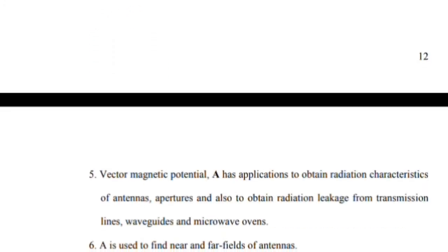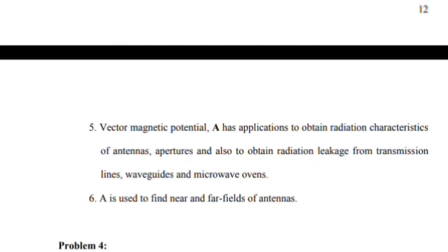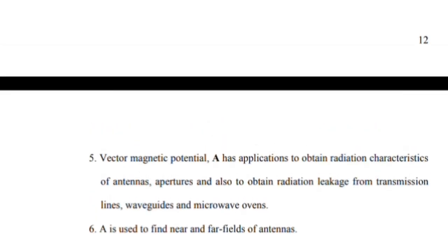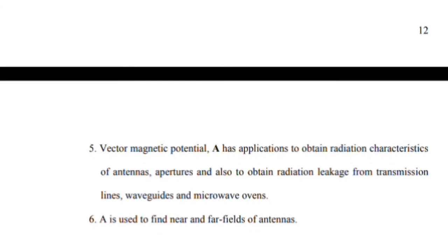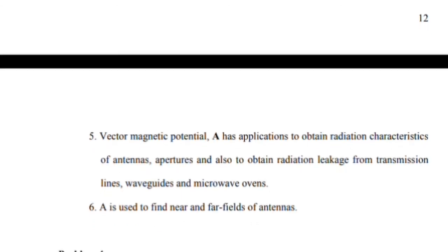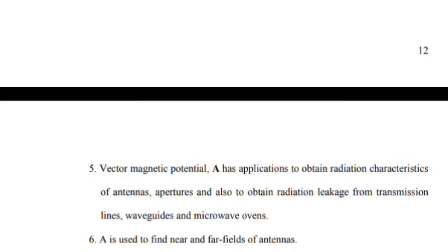Vector magnetic potential, as an application, is used to obtain radiation characteristics of antennas, and also used to obtain radiation leakage of transmission lines, waveguides, and microwave ovens. The application of vector magnetic potential is more useful for ECE subjects involving radio waves and radiation leakage. Vector magnetic potential is also used to find near and far fields of antennas.